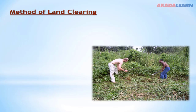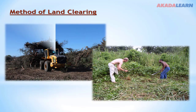Methods of land clearing. We have basically two methods of land clearing. We have the traditional method, which involves the use of cutlass and axes. Then we have the modern method, which involves the use of bulldozers and other kinds of heavy machinery. Whichever method is used, care must be taken that there is minimum disturbance to the topsoil, since the topsoil contains most of the nutrients needed for plants' growth and development.